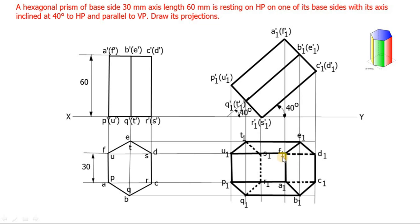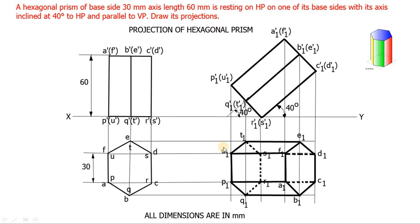This is the final diagram - the top view and front view of the hexagonal prism when it is resting on HP with the axis inclined 40 degrees to HP. You can write all dimensions or note it as projection of solids, or you can mention projection of hexagonal prism. Be clear that you have used the correct pencil: the simple projection diagrams should be drawn using 2H pencil, and the final diagrams in HB pencil. We will meet with different solids in the next class. Thank you.